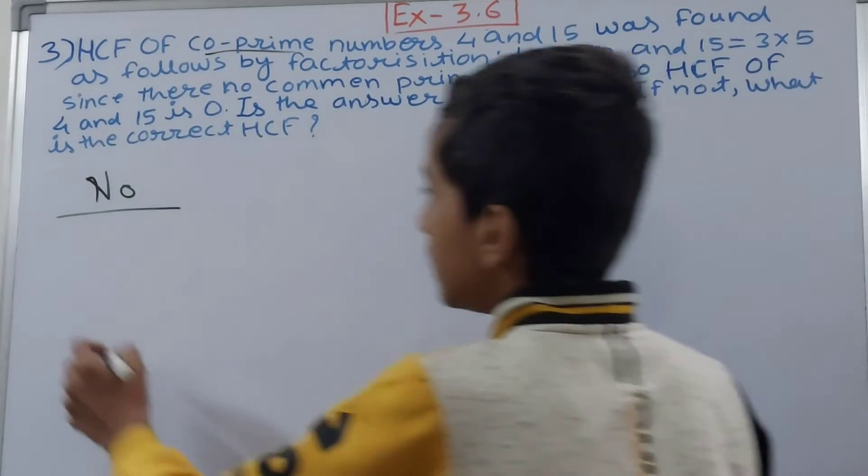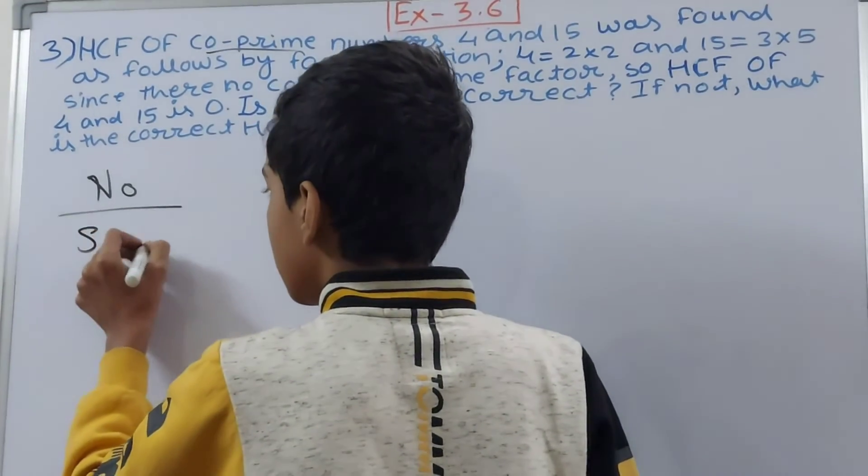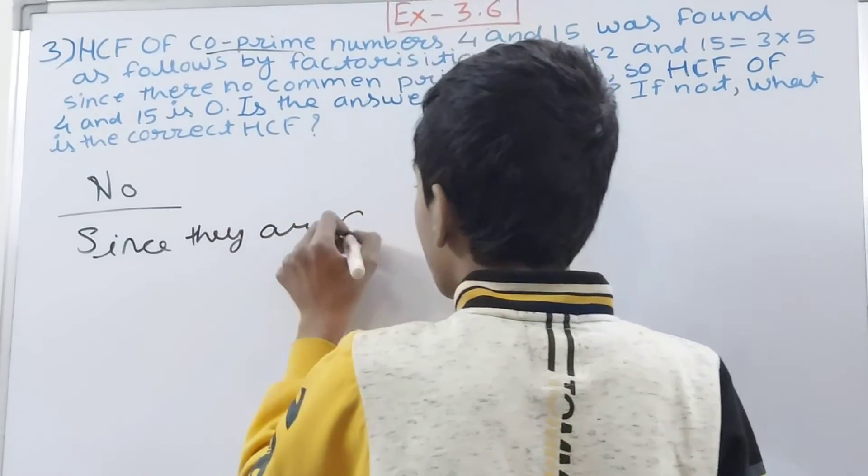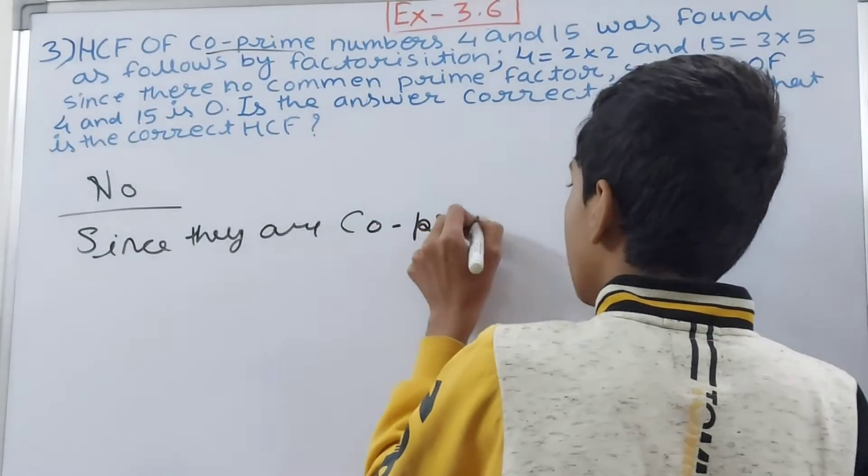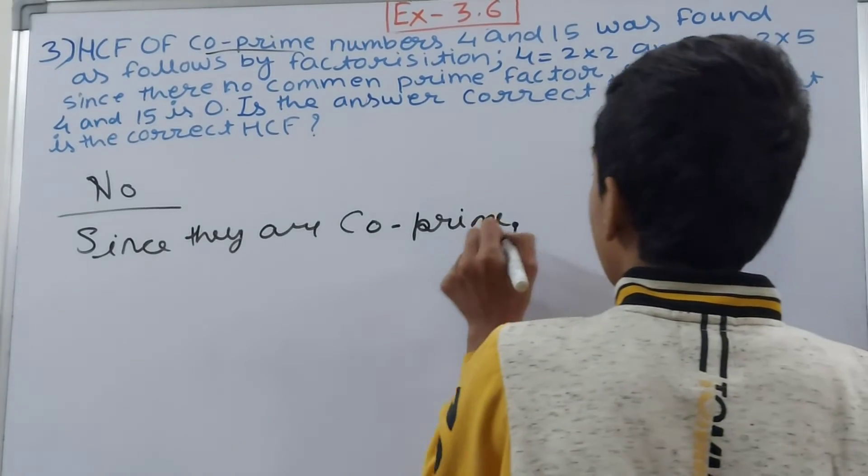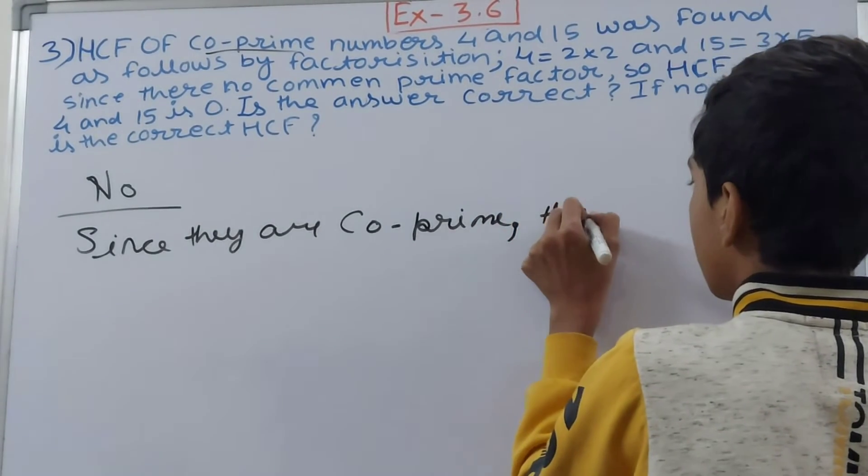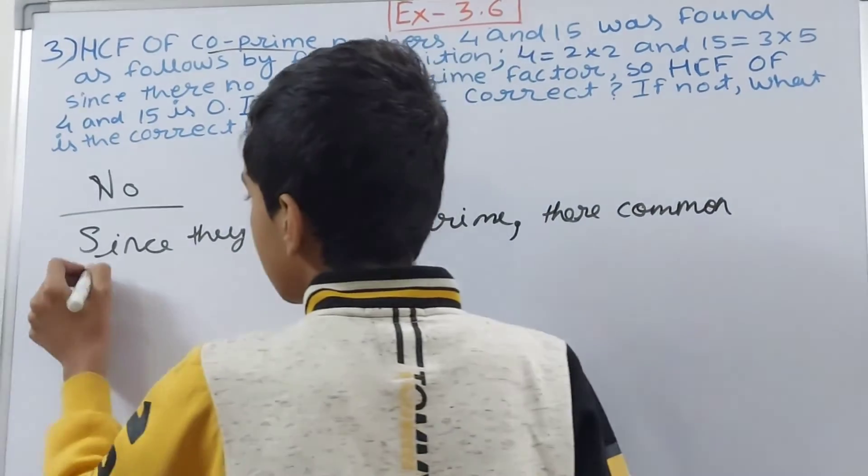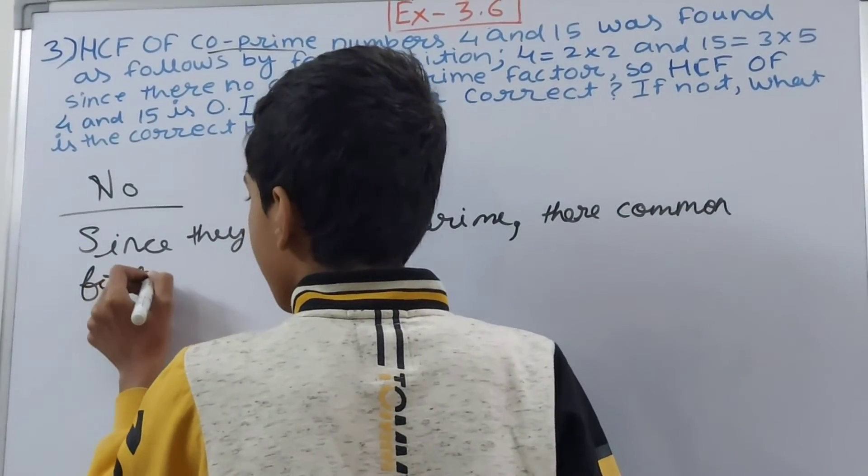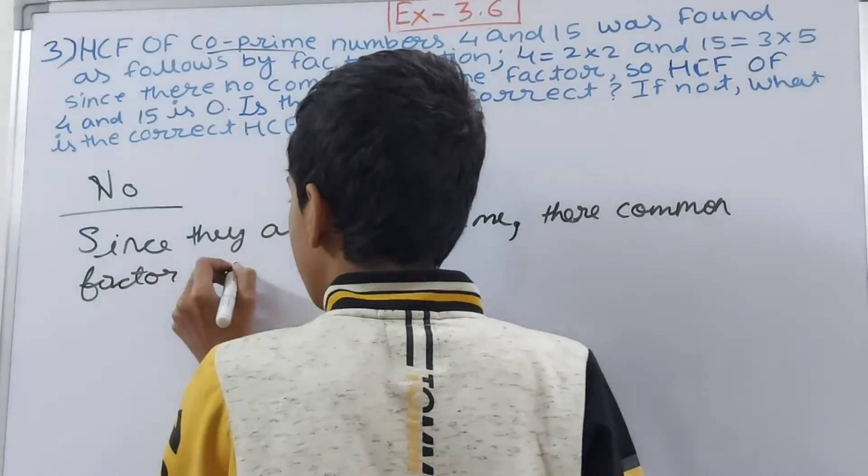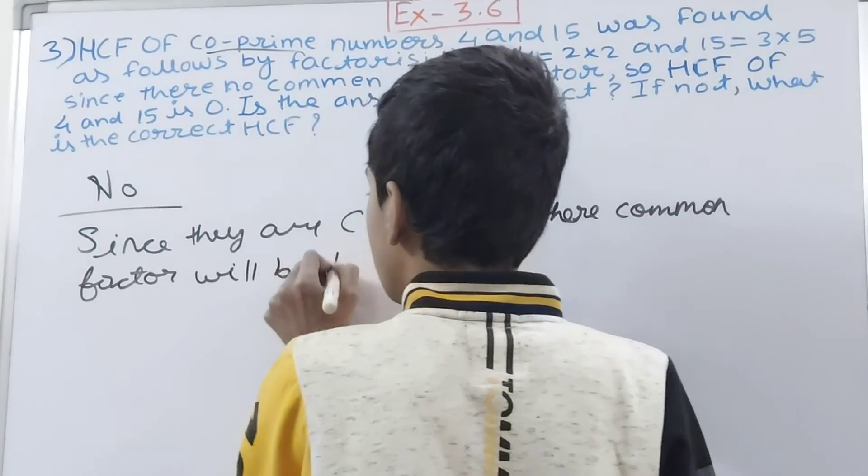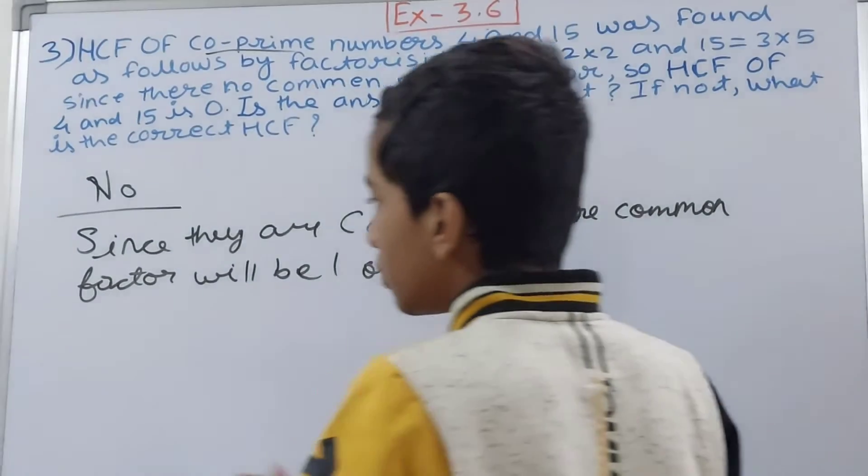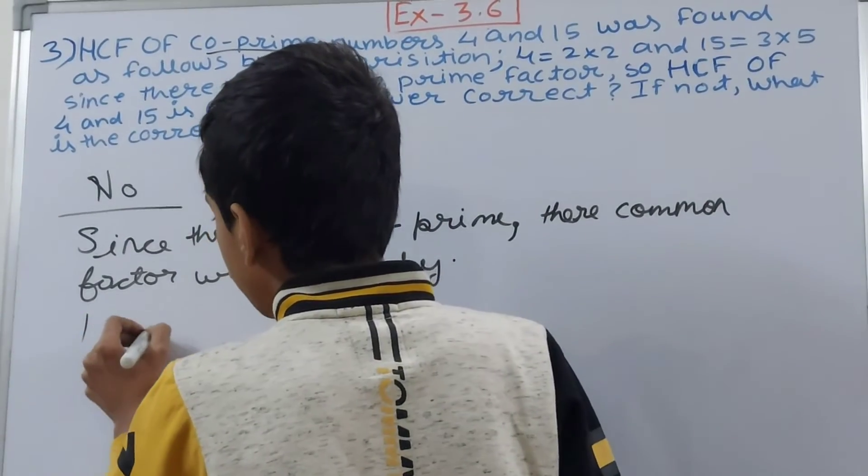So that means you can write here: Since they are co-prime, their common factor will be one only. They will not have any other common factor.